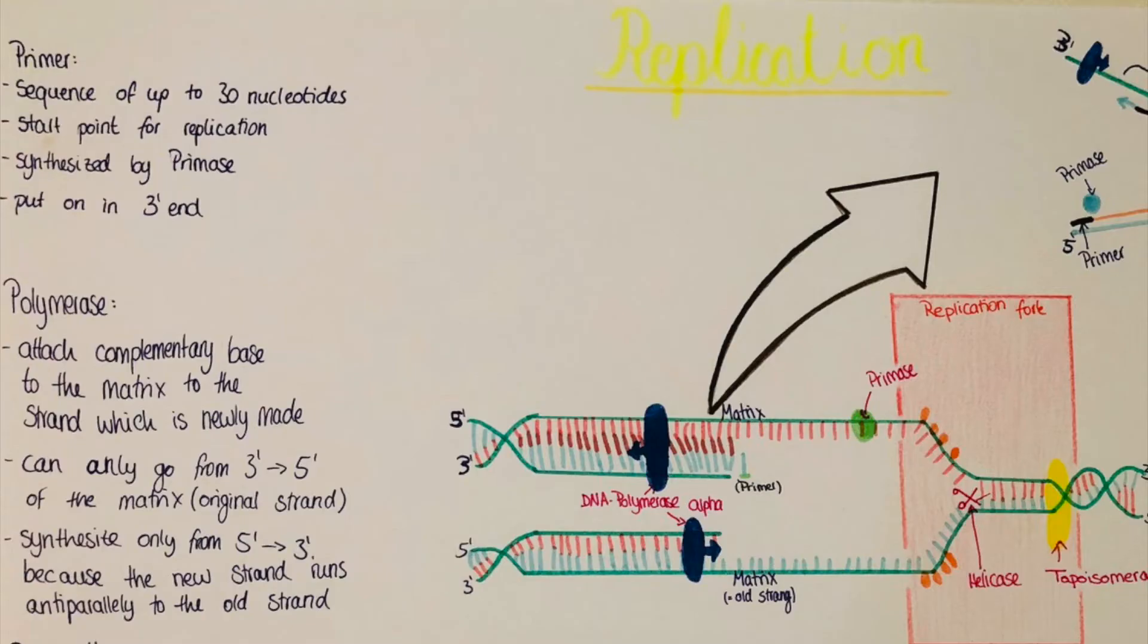The primer is a sequence of up to 30 nucleotides, and these are set together by the enzyme primase and are put on at the 3' end of the DNA. The DNA has a 3' end and a 5' end. That's depending on the caps attached to the DNA.